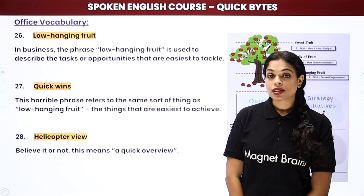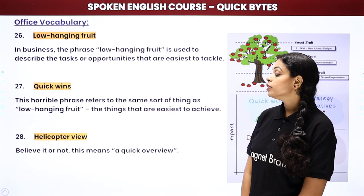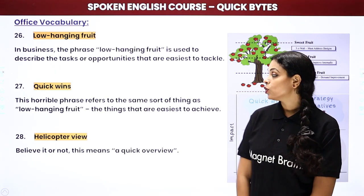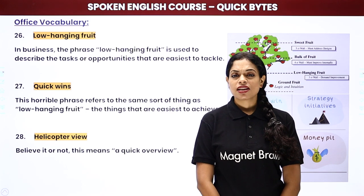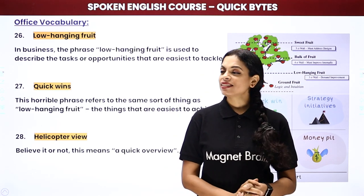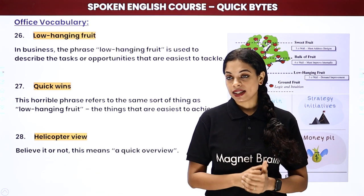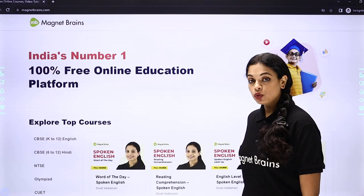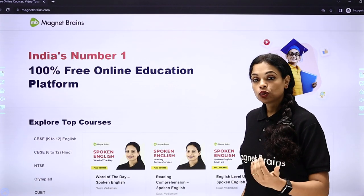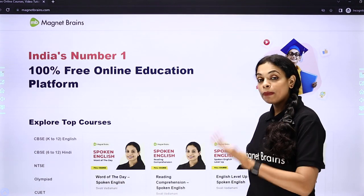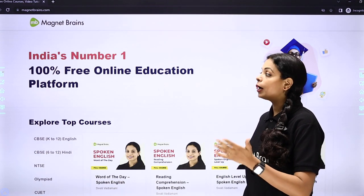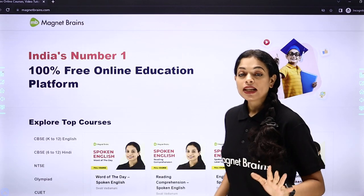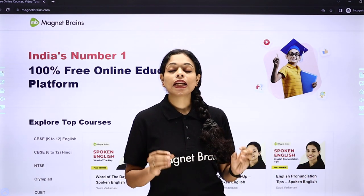Next is quick wins. Quick wins refers to something similar to low hanging fruit — the things that are easiest to achieve. For example, 'You all have to submit this by Thursday — that's a quick win,' meaning we can easily do that. Next is helicopter view. Helicopter view means a 360-degree view of something — seeing what will happen, what won't happen, what problems might come. It means discussing every aspect of something — that is a helicopter view.